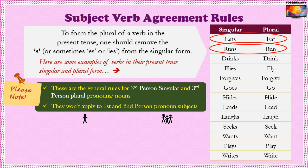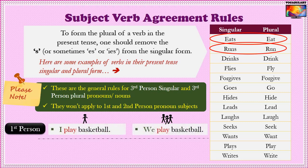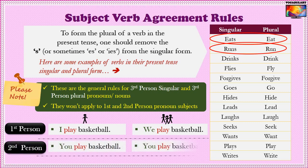There are some exceptions in the verb form for first and second person pronouns. For instance, 'I play basketball' and 'We play basketball' — the verb form is 'play' for both the singular subject 'I' and the plural subject 'we.' Similarly, 'you play basketball' — the second person pronoun remains 'you' for both singular and plural, and so does the verb form 'play.'